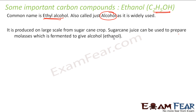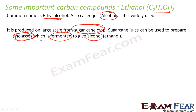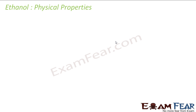Ethanol is produced on a large scale from sugarcane. Sugarcane juice is used to produce molasses, which is then fermented to produce alcohol. So you have molasses, you ferment it, and you get alcohol — also called ethyl alcohol. That is how you get it from sugarcane.